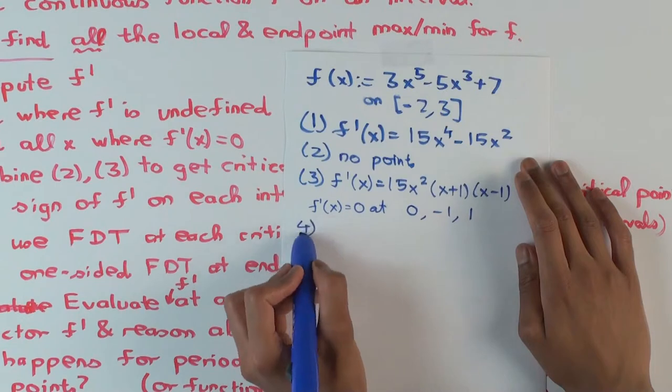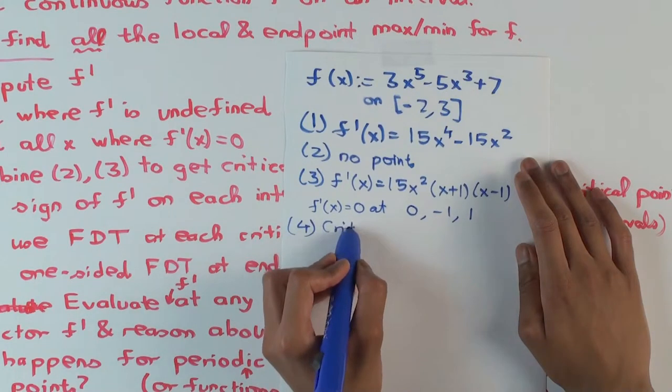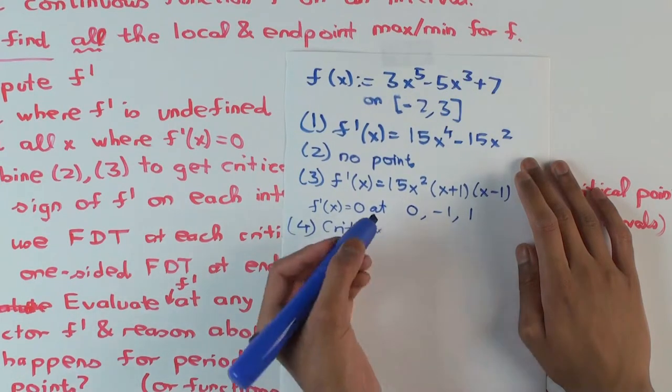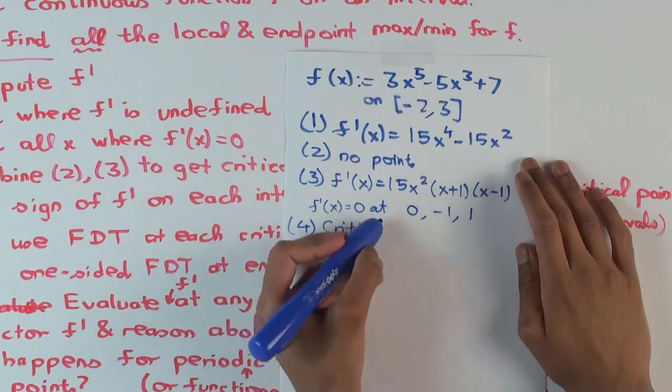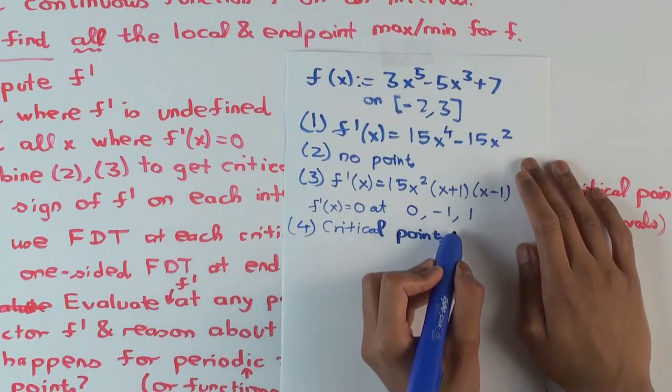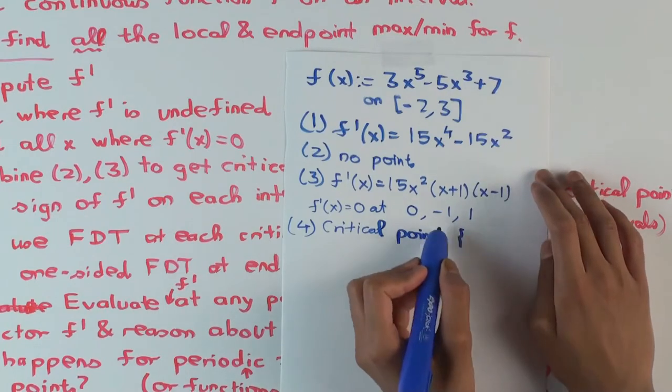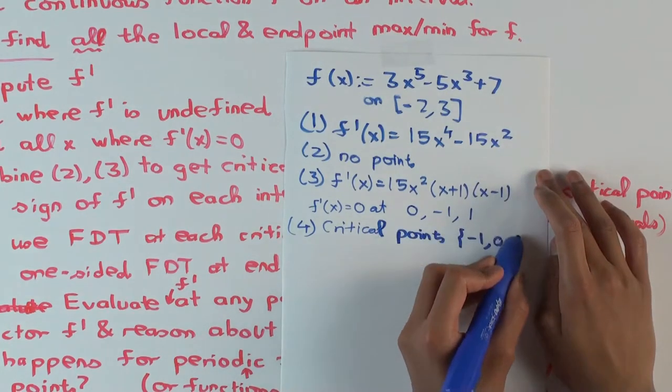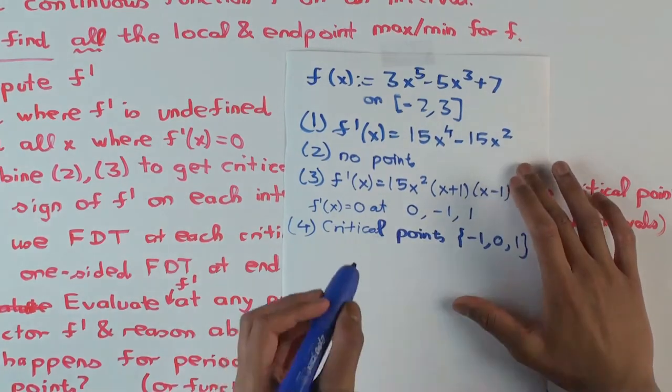So what are the critical points? x equals 0, negative 1, 1. Let's just arrange them in increasing order: negative 1, 0, 1.